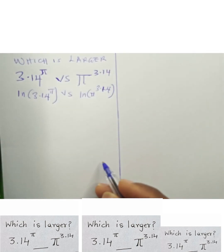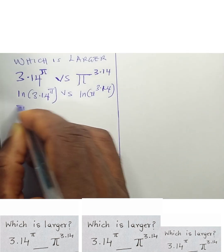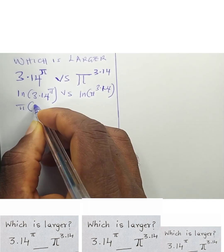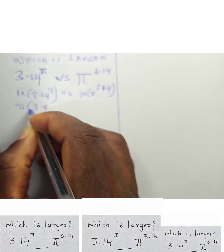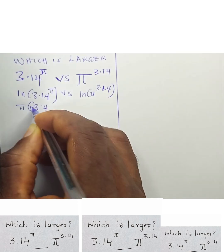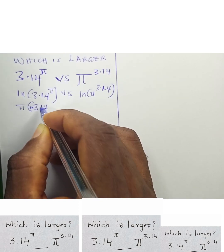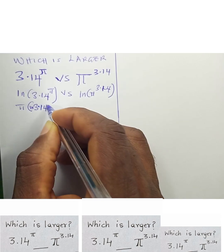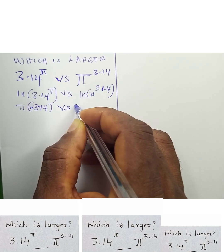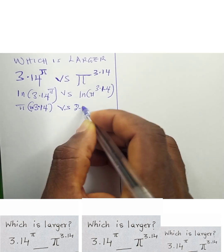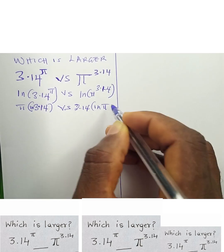That is what we have here. Applying the log power rule, we get pi · ln(3.14) versus 3.14 · ln(pi).